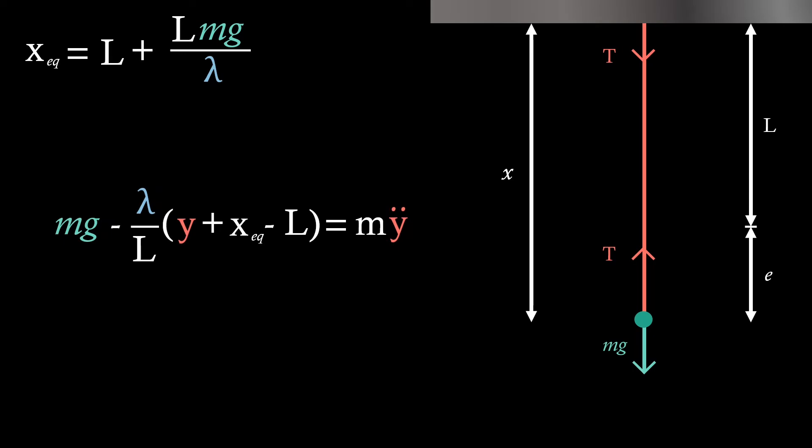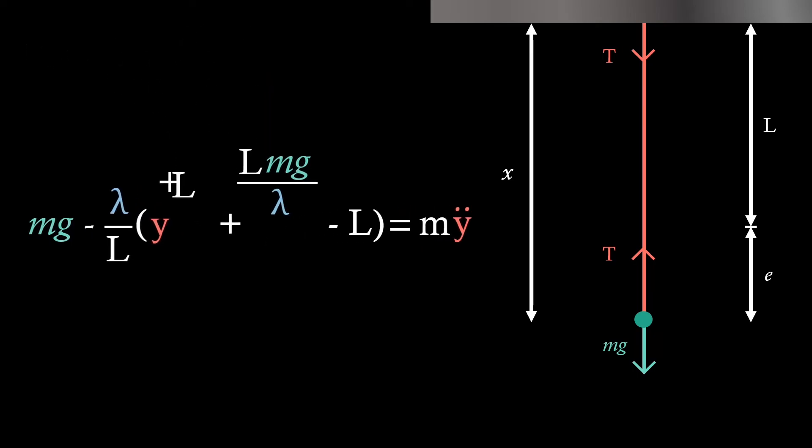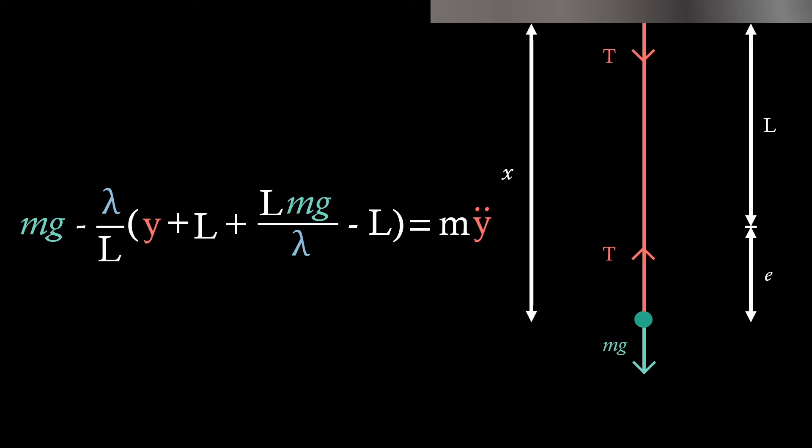We see that we get this xEQ term as well, which we also know, so we can substitute that in as well. So this is actually quite a complicated looking expression, but we've actually set it up so that it will reduce really well. We see that inside of our brackets, we've got a plus and a minus L, so they can cancel each other out. Then we expand our brackets, and we see in this mg term that the constants will cancel. And nicely, we see that the mg terms cancel each other out as well, leaving us with a much simpler ODE.